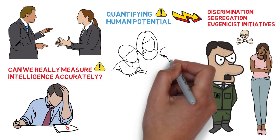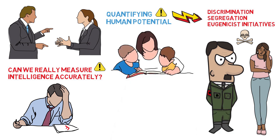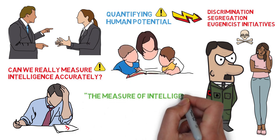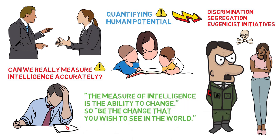Additional research is needed to better understand the role of genetic, cultural, socio-economic and educational components in human potentials. The measure of intelligence is the ability to change, so be the change that you wish to see in the world.